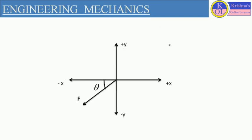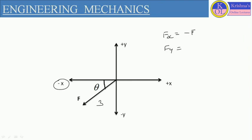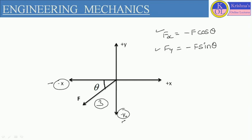Now let us consider another case when we are considering this force F in the third quadrant, and this force F is making angle theta with the x direction. Here we can define the component of this force F. If we want to define Fx, you can see this force F is making angle theta with the negative x direction. So Fx should be minus F cos theta. And Fy — here we have minus y — so it would be minus F sin theta. When this force is existing in the third quadrant, we define the components in x and y directions as per the sign convention.